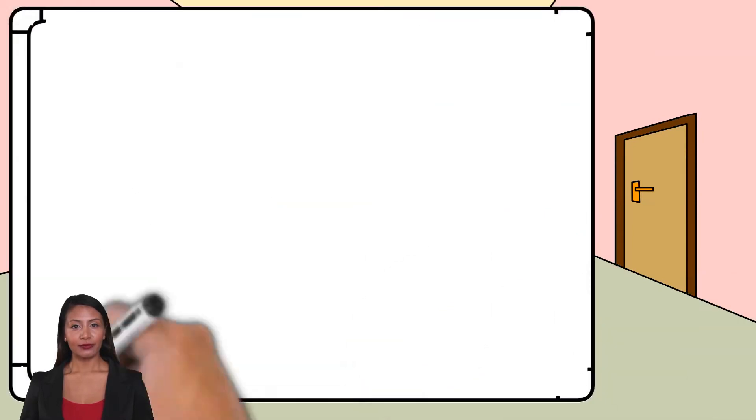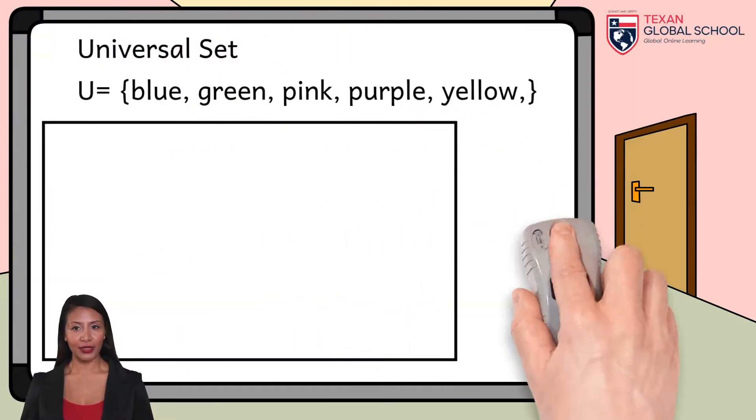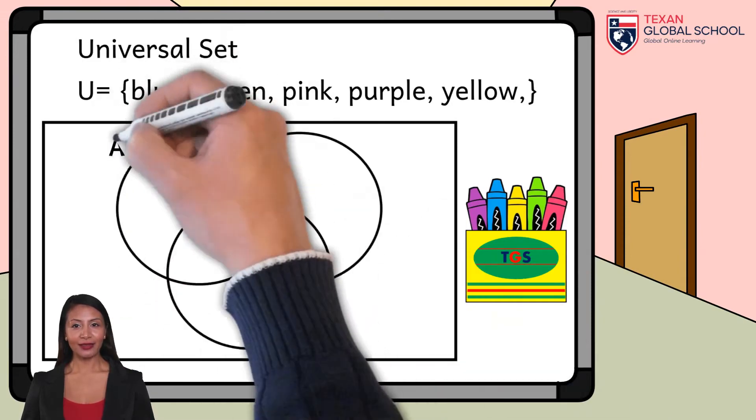They ask us to solve the operations A complement, B complement, and C complement. We obtain the universal set composed of the elements blue, green, pink, purple, and yellow crayons.